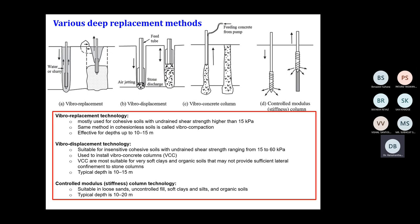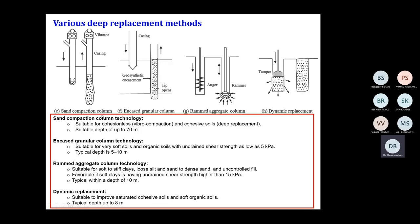In the case of vibro displacement we can also construct what is called a vibro concrete column — typically called a VCC. There is another option: without any displacement or replacement, we can insert a column called a controlled modulus stiffness column. Everything has its own application and utility. Depending upon the soil properties, you can use vibro displacement, vibro replacement, vibro concrete column, or controlled modulus columns.